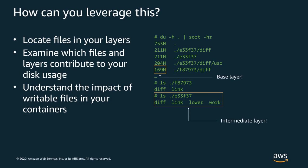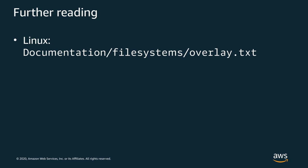Now that you understand more about how container images and Docker layers work, you can apply this knowledge to troubleshoot. You now know where to look for space taken up by hidden files, and you know the impact of modifying files that exist in your images. You can find additional documentation about the overlay file system in the Linux kernel source tree.